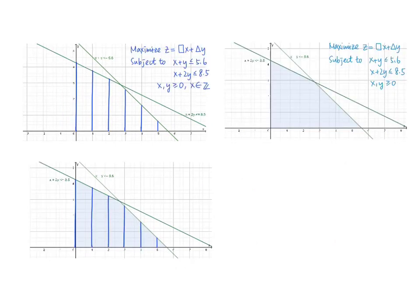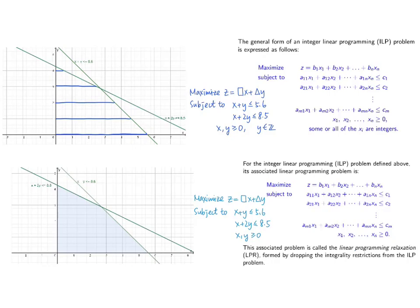Again, since the ILP problem has additional restrictions on top of the LP relaxation, the feasible set of the ILP is a subset of the feasible set of the LP relaxation, as shown in the third graph. The final scenario is a mixed integer programming problem with the same setting as before, except that this time we only restrict y to be an integer. Please refer to the illustration by yourself.